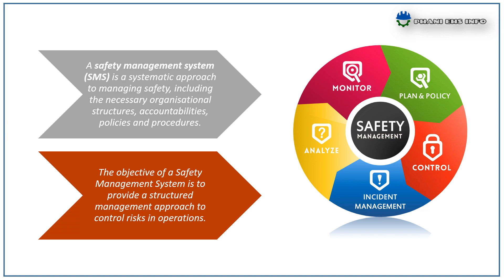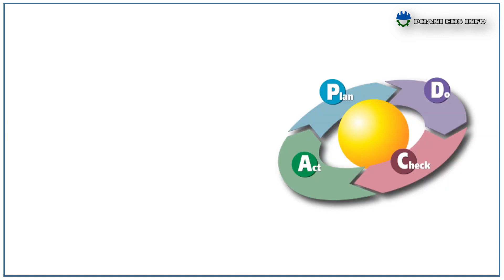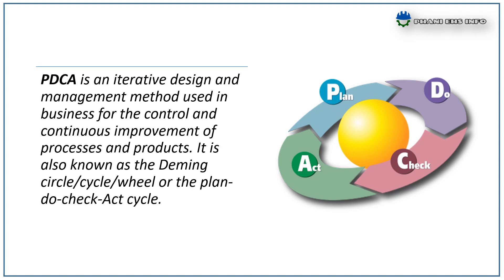Next, the key elements of health and safety management system. Before going into the key elements of safety management system, let us know about the PDCA cycle. It is an interactive design and management method used in business for control and continuous improvement of processes and products. It is also known as the Deming circle, cycle, or wheel.